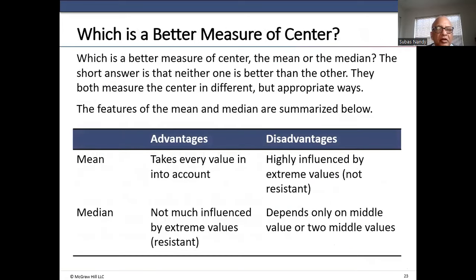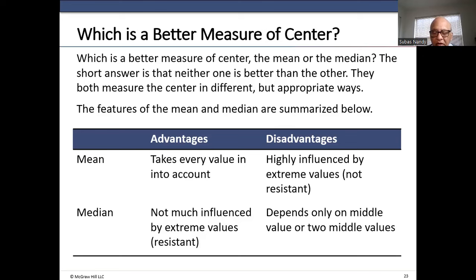Which is a better measure of center — mean or median? The short answer is neither one is better than the other; they both measure the center in different but appropriate ways. Mean takes every value into account but is highly influenced by extreme values. Median is not much influenced by extreme values — it is resistant — and depends on the middle value or two middle values.